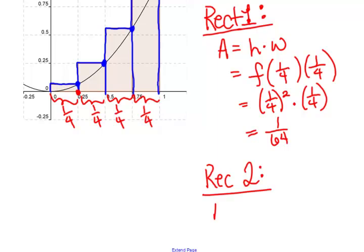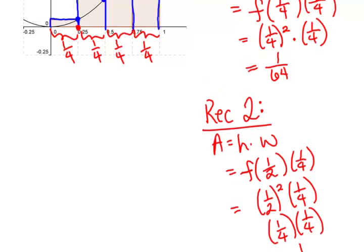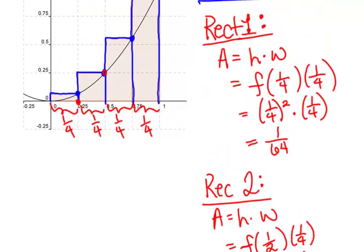So rectangle number two, area is height times width. So the width is still going to be a quarter. And this time to get the height, I'm going to put one number into the function. Point five, one-half, right? So this is a half squared times a fourth, which is a fourth times a fourth, which is a sixteenth. And I could have told, I mean, you could have told me that by looking at the picture too, right? The height there is a quarter. All right, so that's rectangle two.